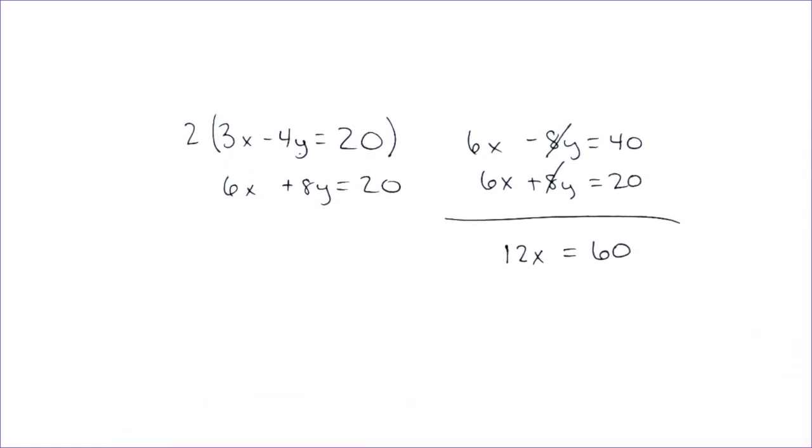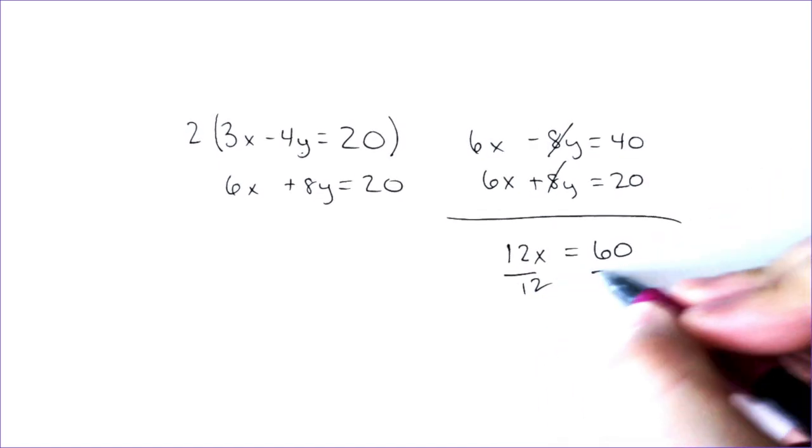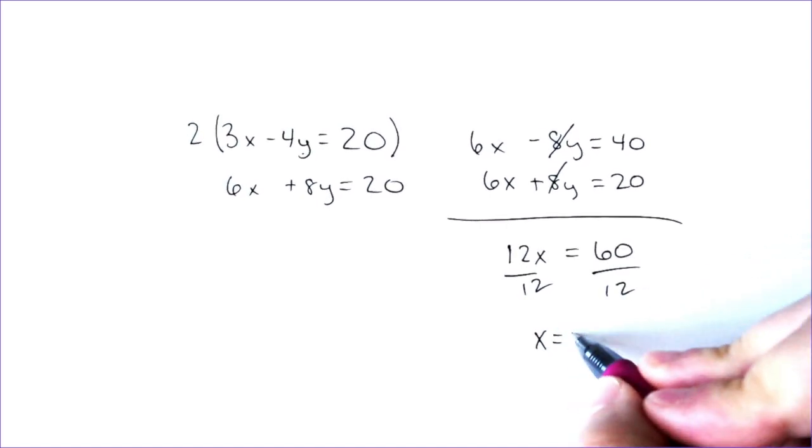And we didn't end up with 0 equals 0, or 4 equals 4, or a true statement, or a non-true statement. If we ended up with 12x equals 60, you can solve for x by dividing by 12, 12. And when we do that, we get x is equal to 5.